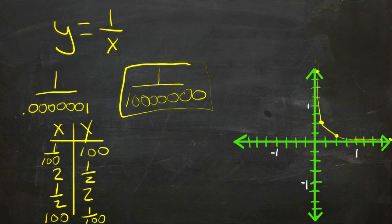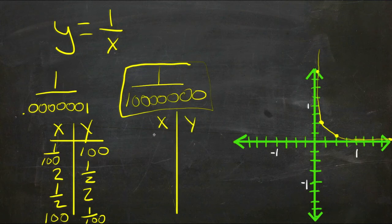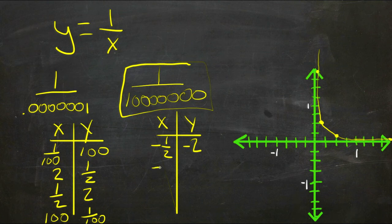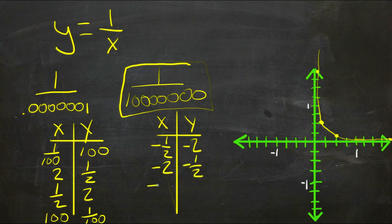Now these are all positive numbers. If we put in negative numbers—x, y, draw ourselves a little straight line here, there we go—now if we do negative one-half, for instance, then y will be negative two. If we do negative two, y will be negative one-half. If we do negative a hundred...